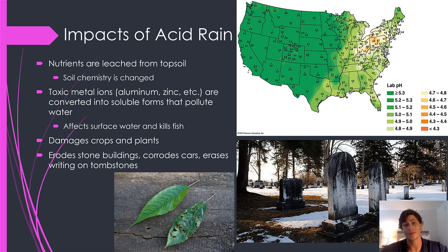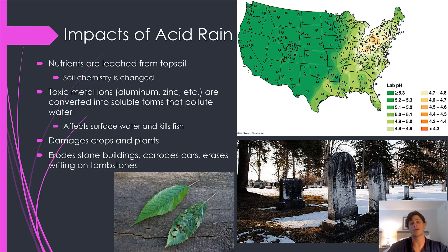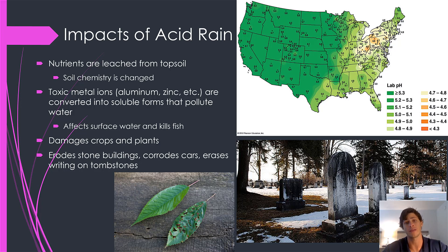Acid rain can be really damaging — it can acidically erode anything it touches. It can cause soils to be leached of their nutrients and alter soil chemistry, implement toxic metal ions, affect surface water pH and kill fish, damage plants and crops, and damage human infrastructure. You can see the effects of acid rain on gravestones, where it's essentially eroding them to the point where they're almost illegible, and eventually will erode them down to nothing.